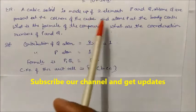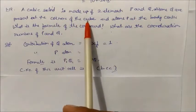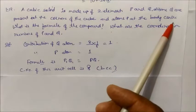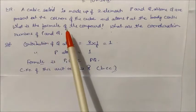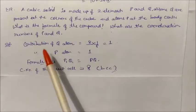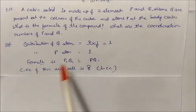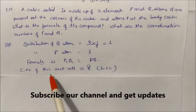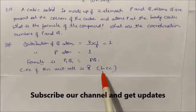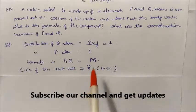A cubic solid unit is made up of two elements P and Q. Atoms Q are at the corners of the cube and atoms P are at the body center. The contribution of Q atoms is 8 × (1/8) = 1, and P atoms contribute 1. So the formula is PQ. The coordination number is 8 because this is a body-centered cubic structure.